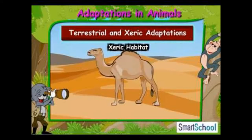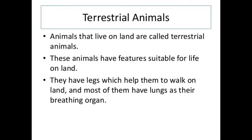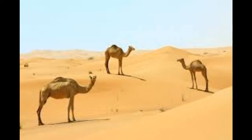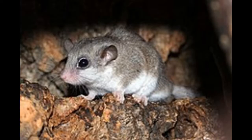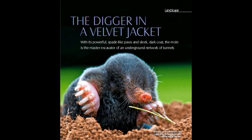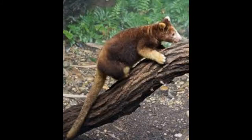Adaptations in terrestrial animals: the animals which live on land are called terrestrial animals. These terrestrial animals live in different habitats like in deserts, in mountains, and on the land as runners, diggers, burrowers, or climbers. According to the body shape and their adaptations, they live in different habitats.